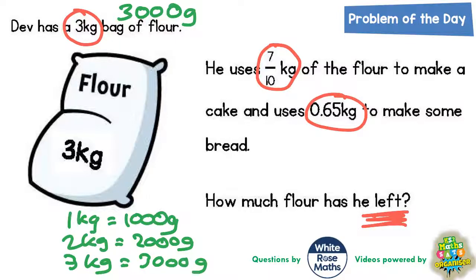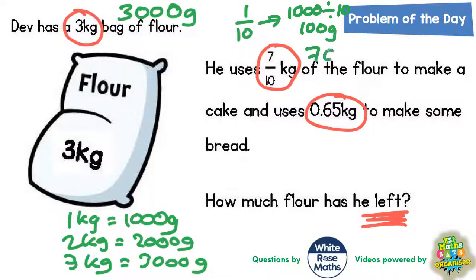And seven tenths of a kilogram - well, one tenth of a kilogram is basically 1,000 divided by 10, and 1,000 divided by 10 is 100g. So one tenth of a kilogram is 100, so two tenths would be 200, three tenths 300g, four tenths 400, five tenths 500, six tenths 600, seven tenths would be 700g.